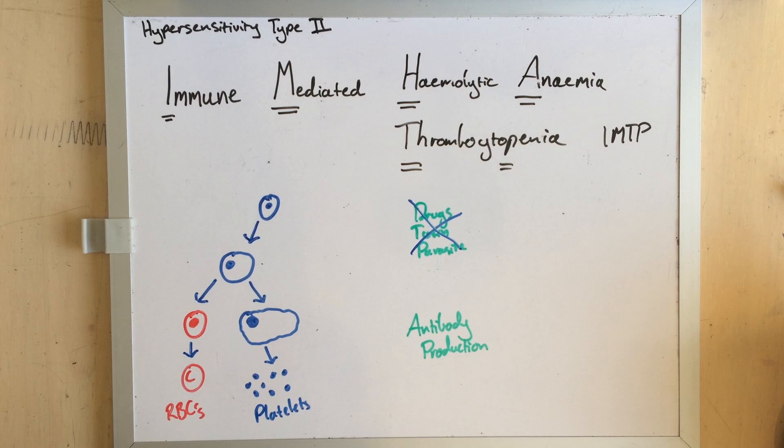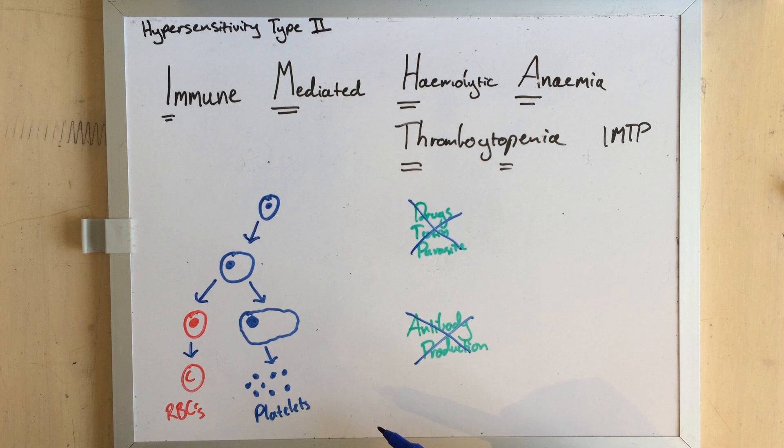At the same time, you load the patient up on immunosuppressants to stop the antibody production against their own cells and to slow down the phagocytosis. The body will try to regenerate from the anemia or the thrombocytopenia, it just needs a break from destroying its own cells.